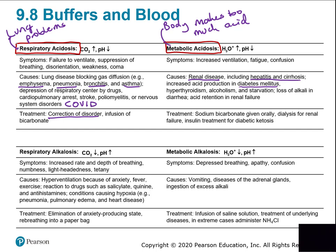In healthcare you'll see acidosis from respiratory issues and from things not functioning correctly in the body. Sepsis — bacteria in the bloodstream causing systemic infection — leads to cell death, and when cells die their waste molecules, which are acids, get dumped into body fluids, causing acid buildup. Respiratory alkalosis and metabolic alkalosis are very rare in comparison.